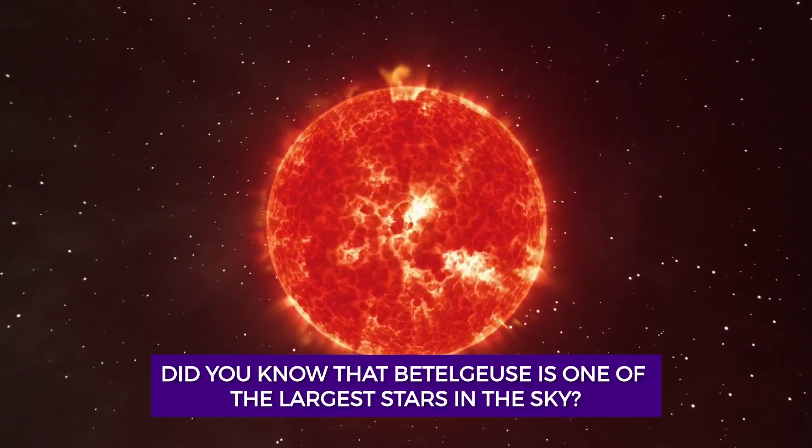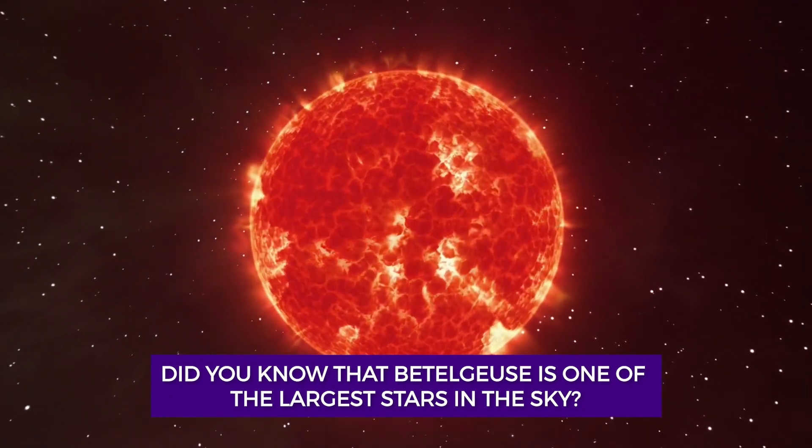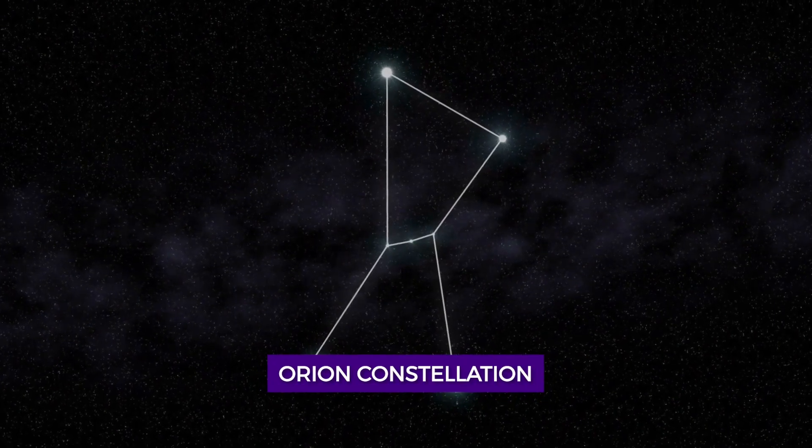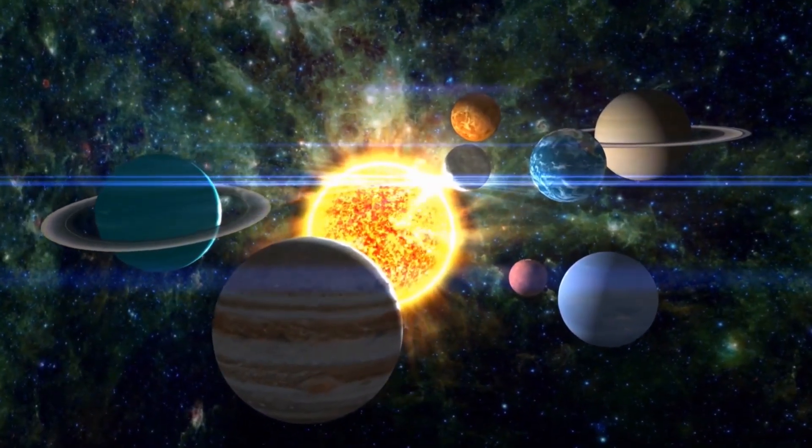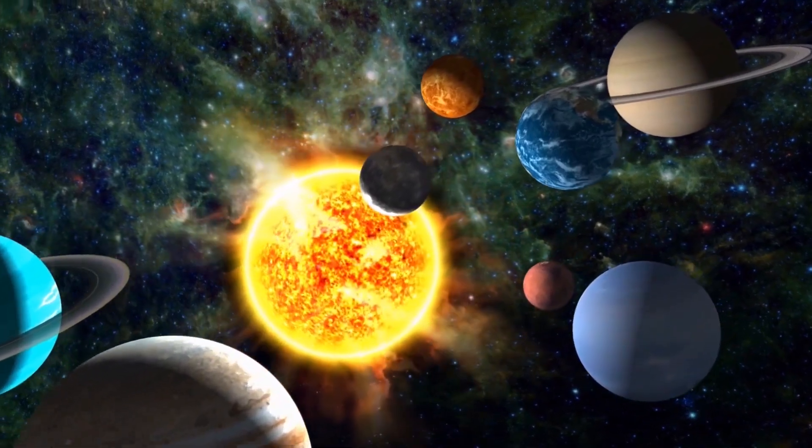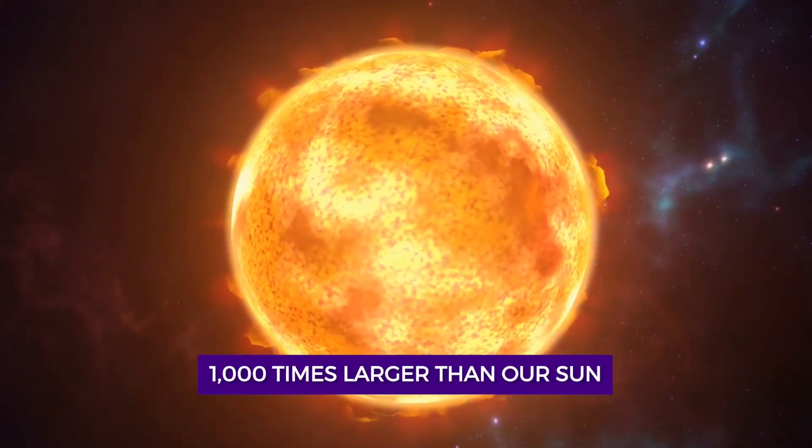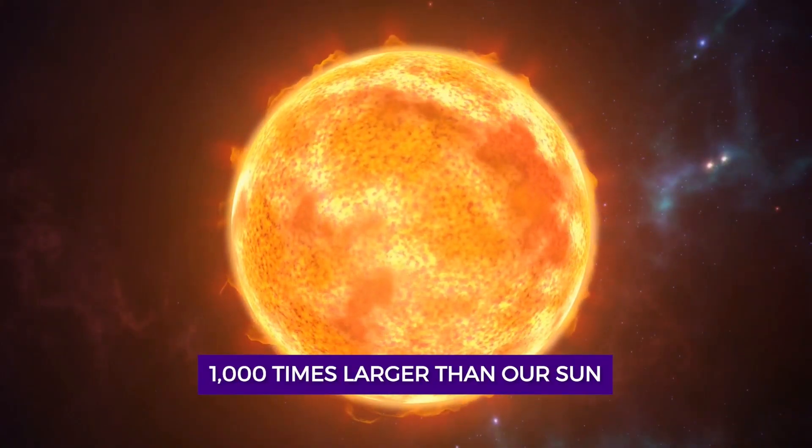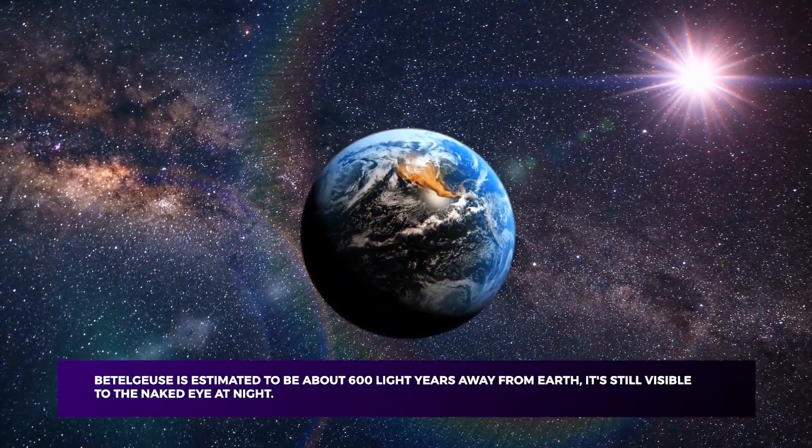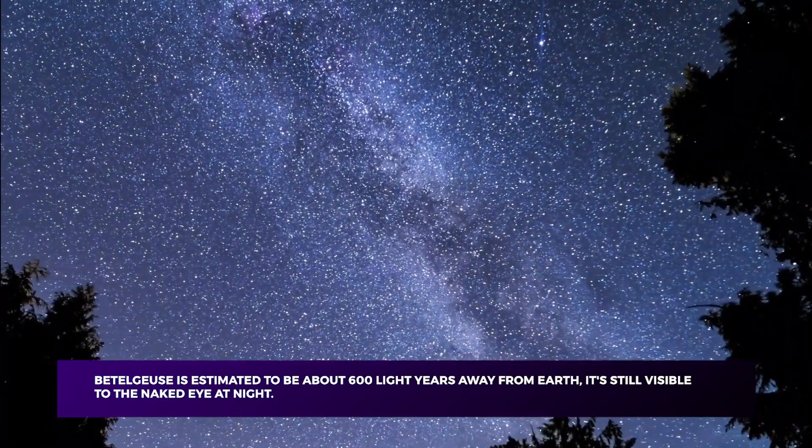Did you know that Betelgeuse is one of the largest stars in the sky? It's actually a red supergiant star located in the Orion constellation. In fact, it's so massive that if it were in our solar system, it would stretch all the way to the orbit of Jupiter. That's over 1,000 times larger than our sun. Although Betelgeuse is estimated to be about 600 light years away from Earth, it's still visible to the naked eye at night.